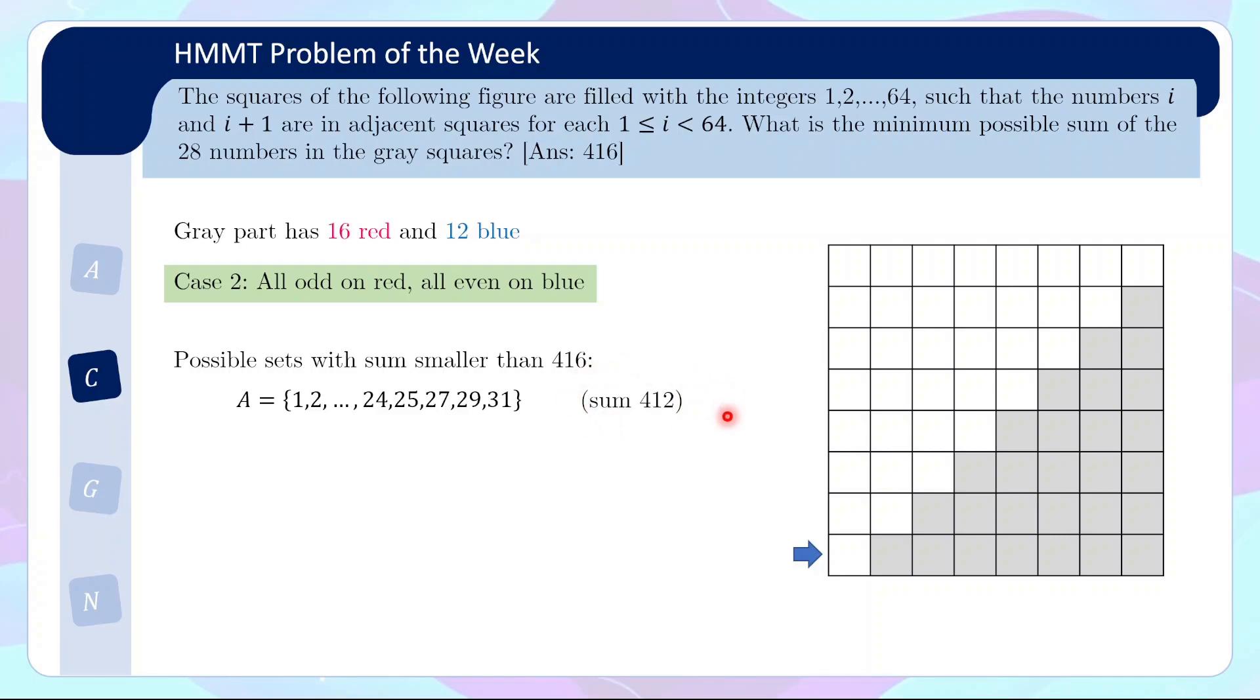And of course, you can bump up numbers to get larger sums. So for example, you can also get a set where you bump this up by a value of 2. So change 24 to 26, you get sum 414. 31 can also be bumped up by 2 to get 33. So replace 31 with 33, and you also get a set with sum 414. And if you stare very carefully, there's really not any other things you can do to increase the sum by less than 4. So these are the only possible sets with sums smaller than 416.